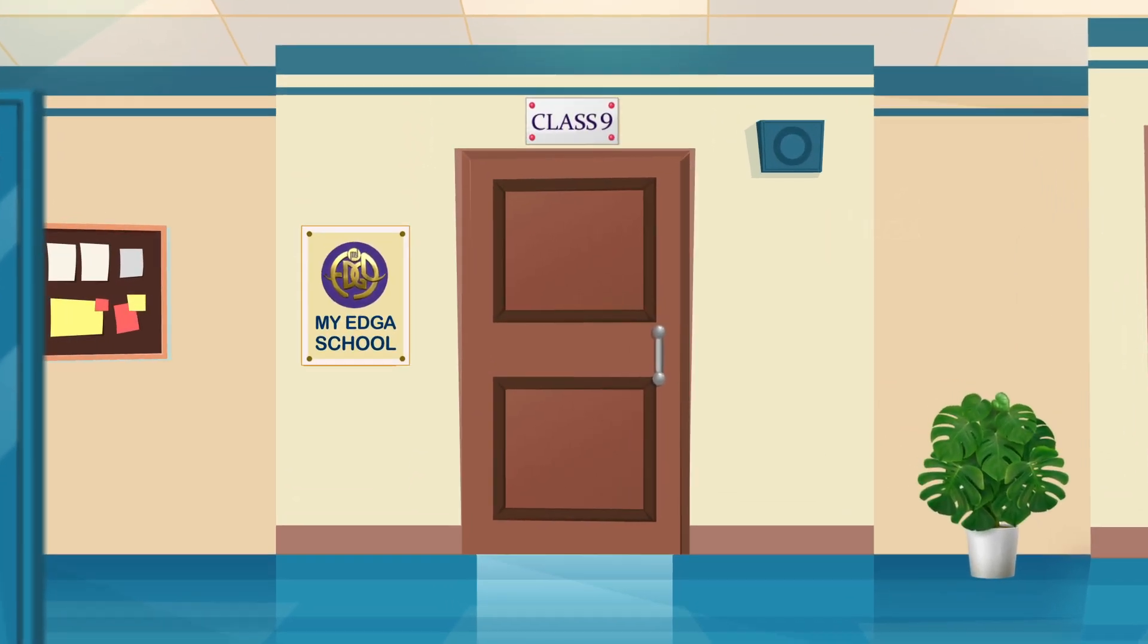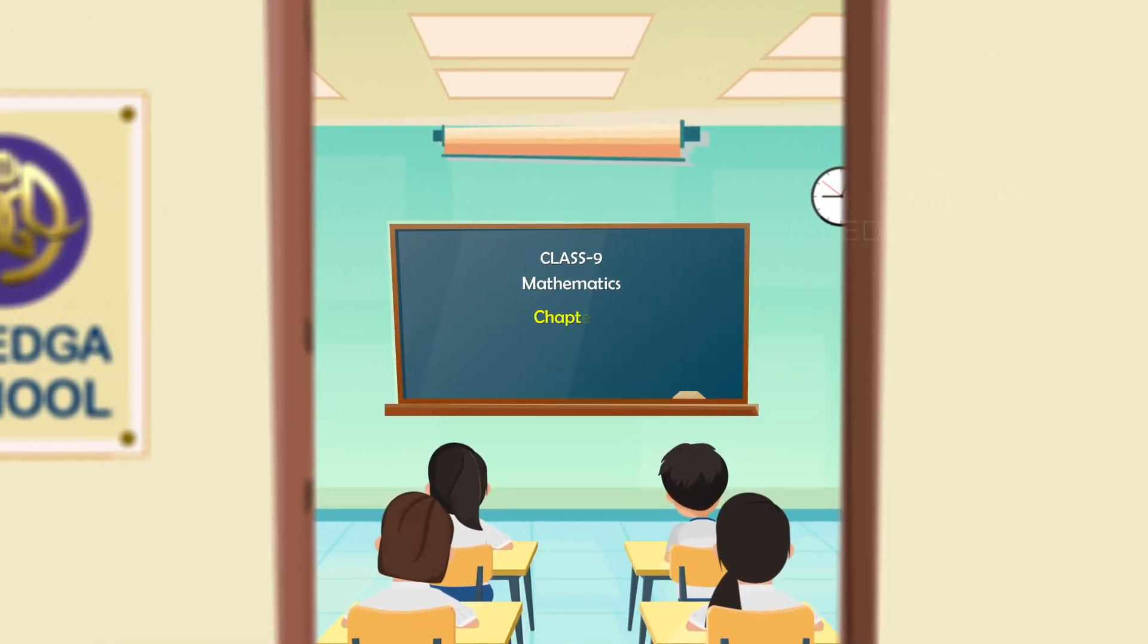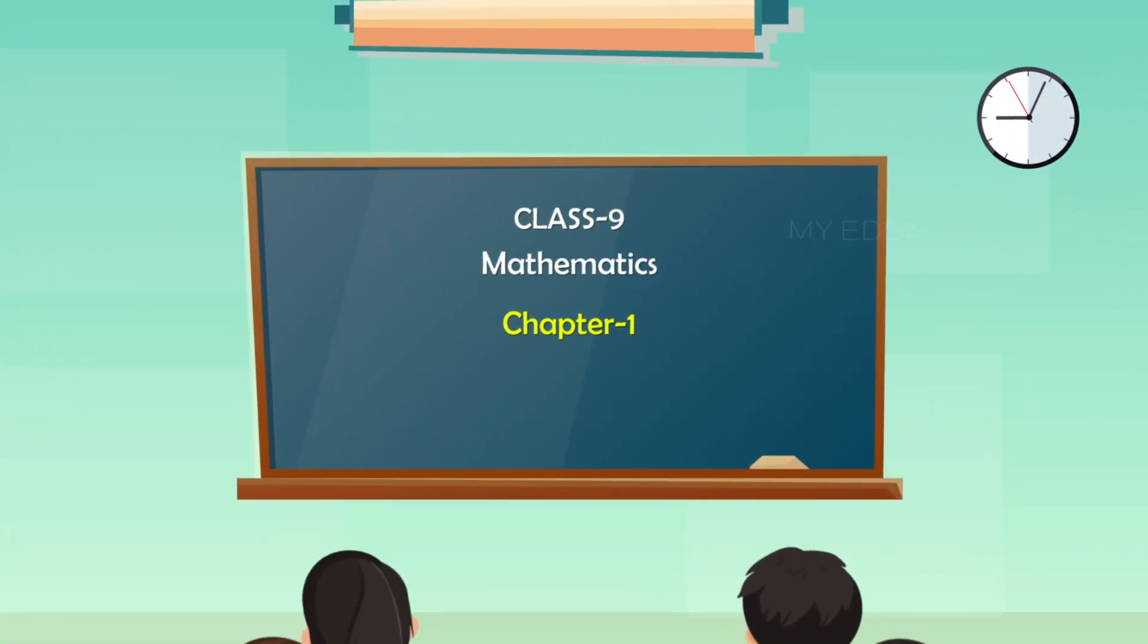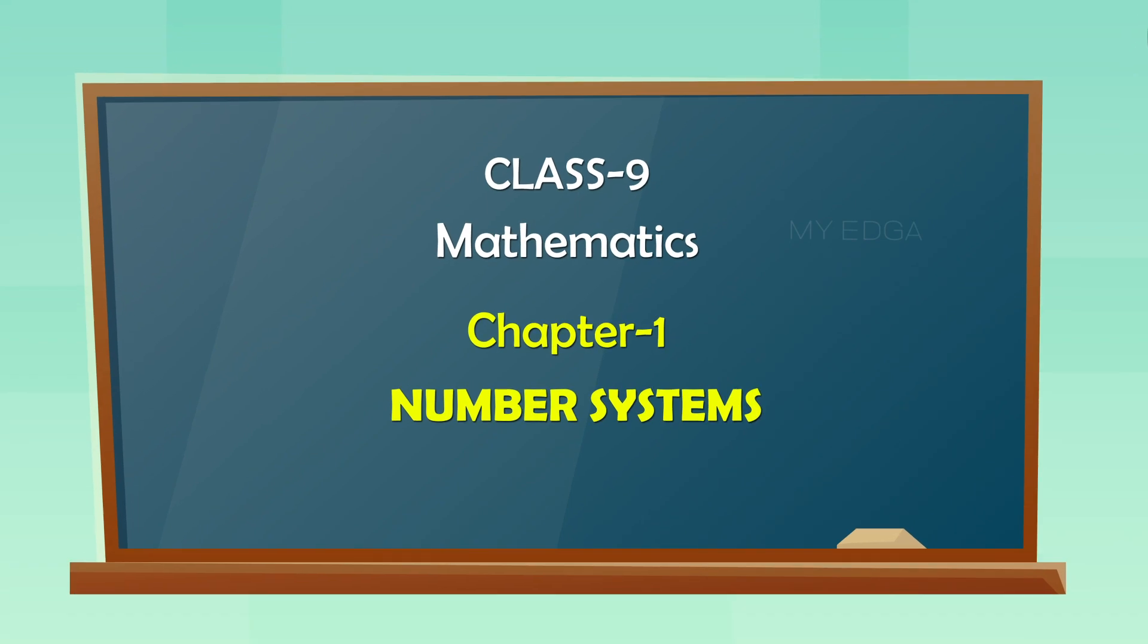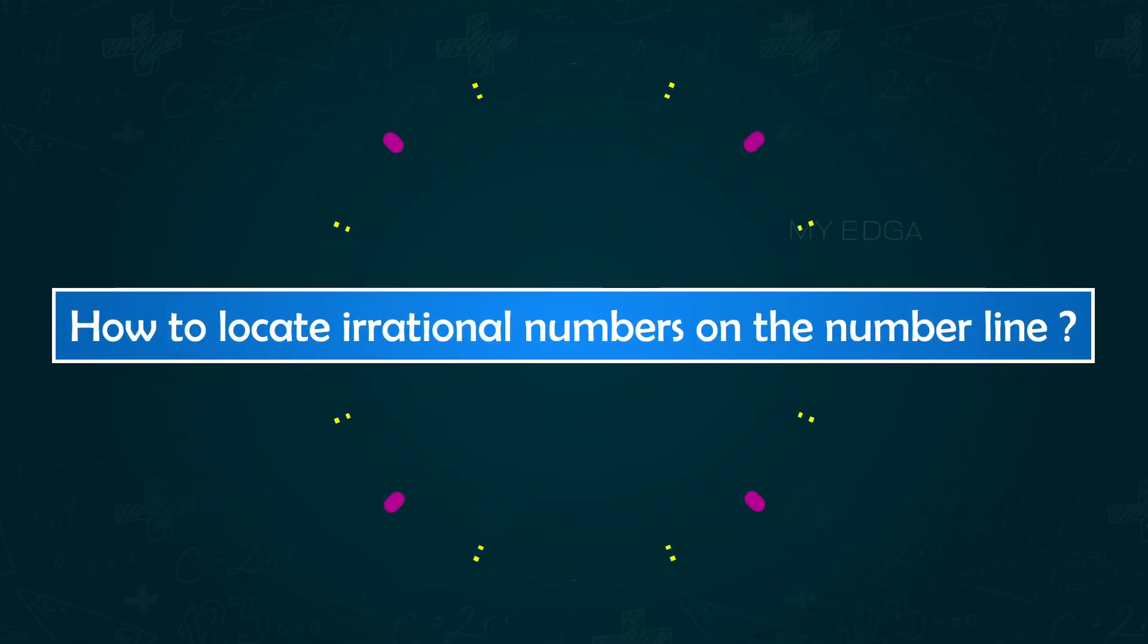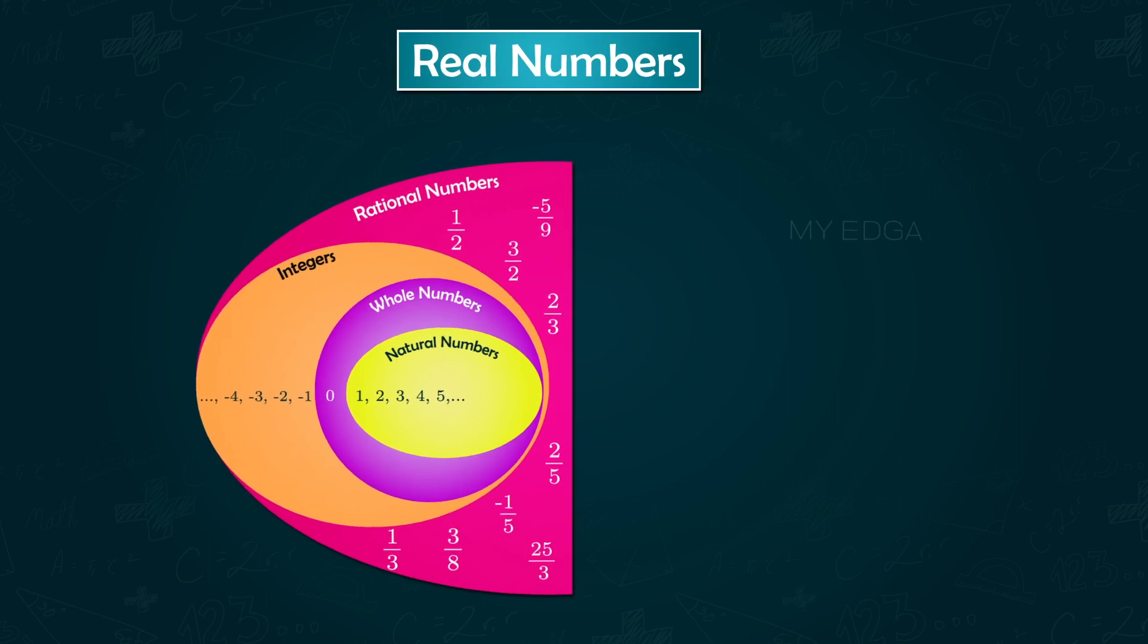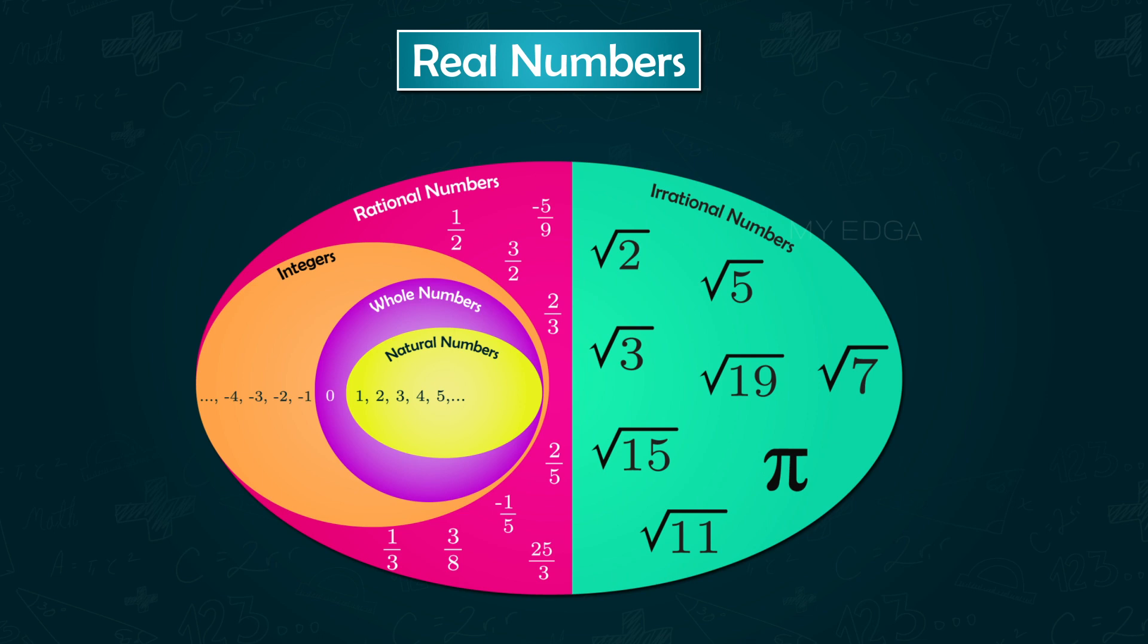Hello everyone, welcome to class 9 videos of chapter 1 number systems. In this video we will learn how to locate irrational numbers on the number line. As you are aware, the collection of all rational numbers and irrational numbers together makes up the collection of real numbers.